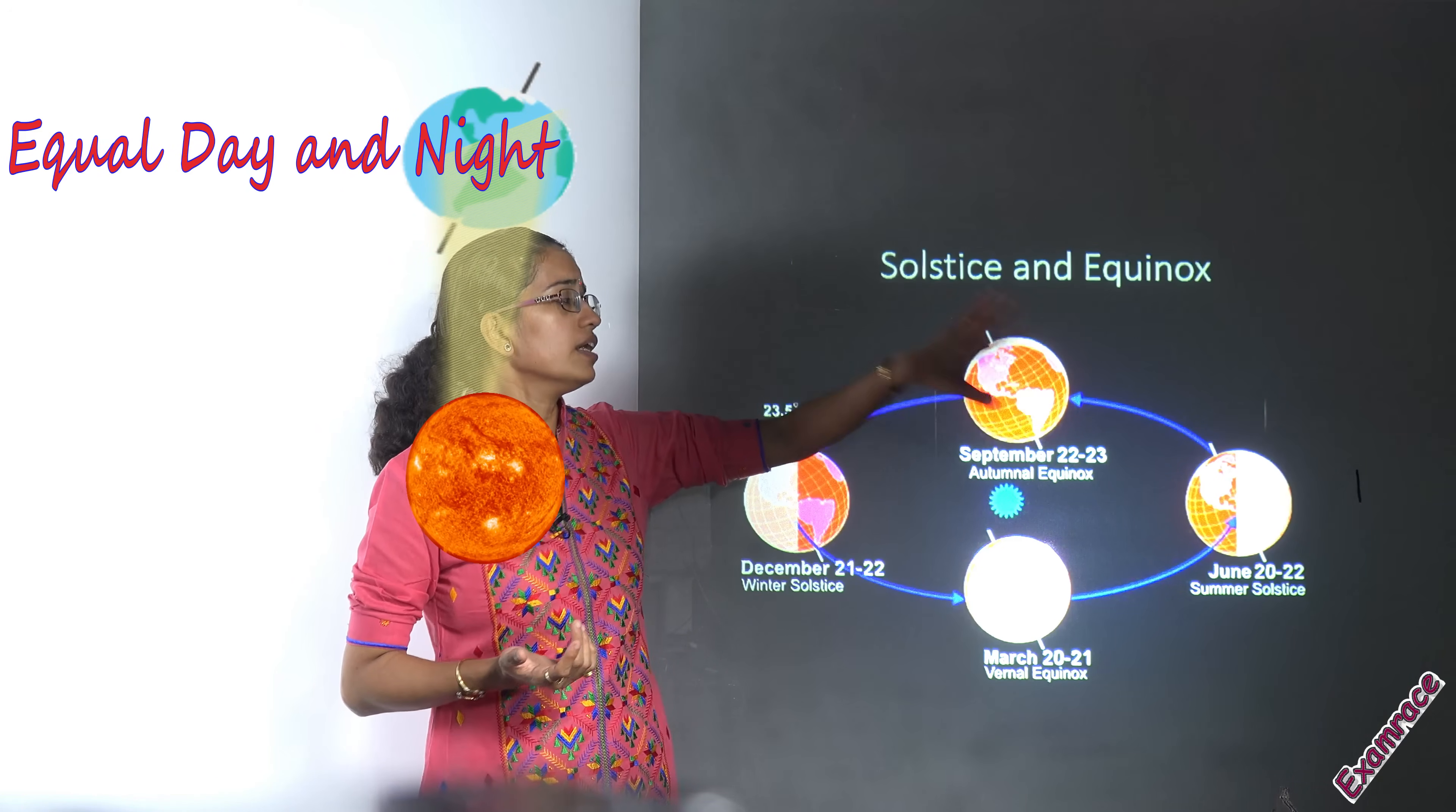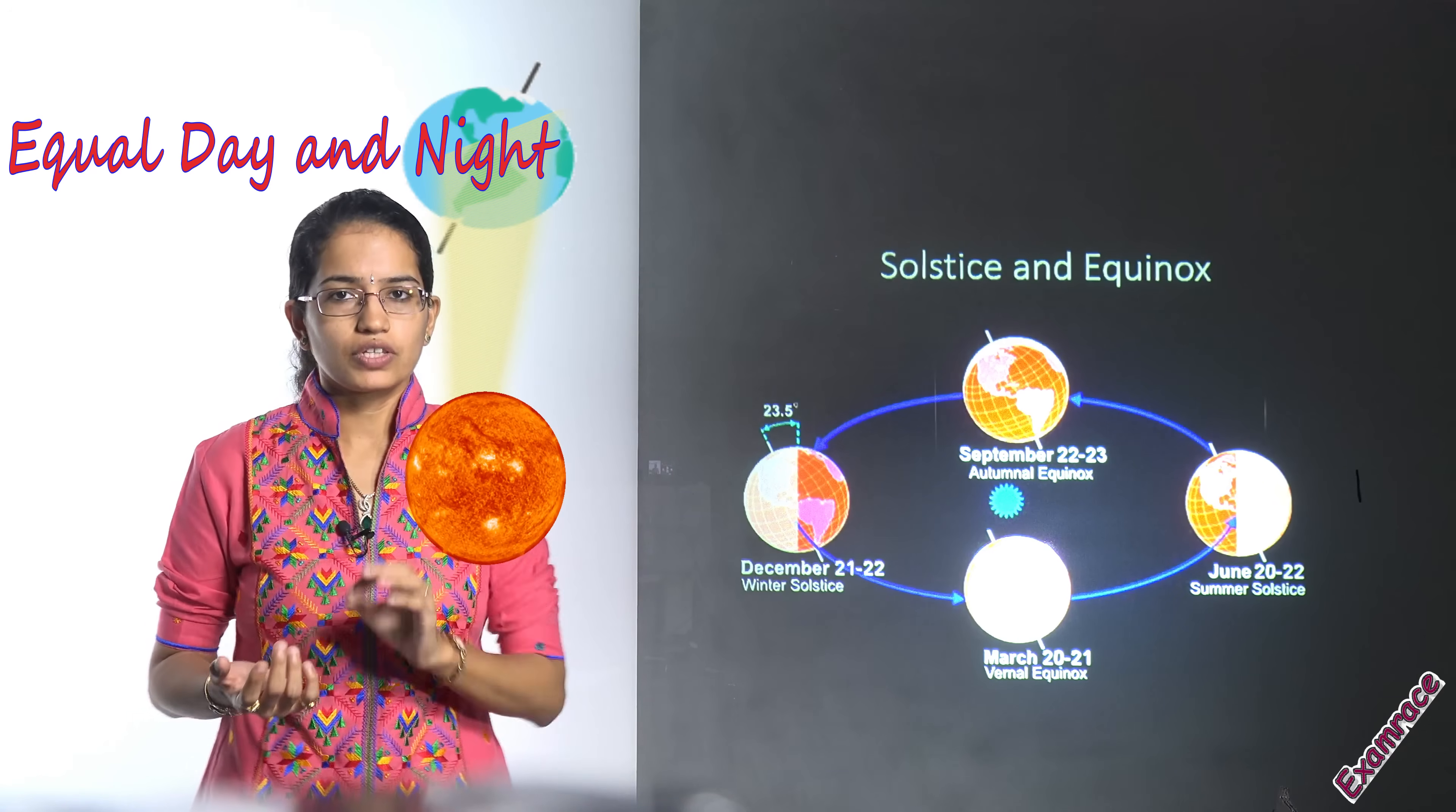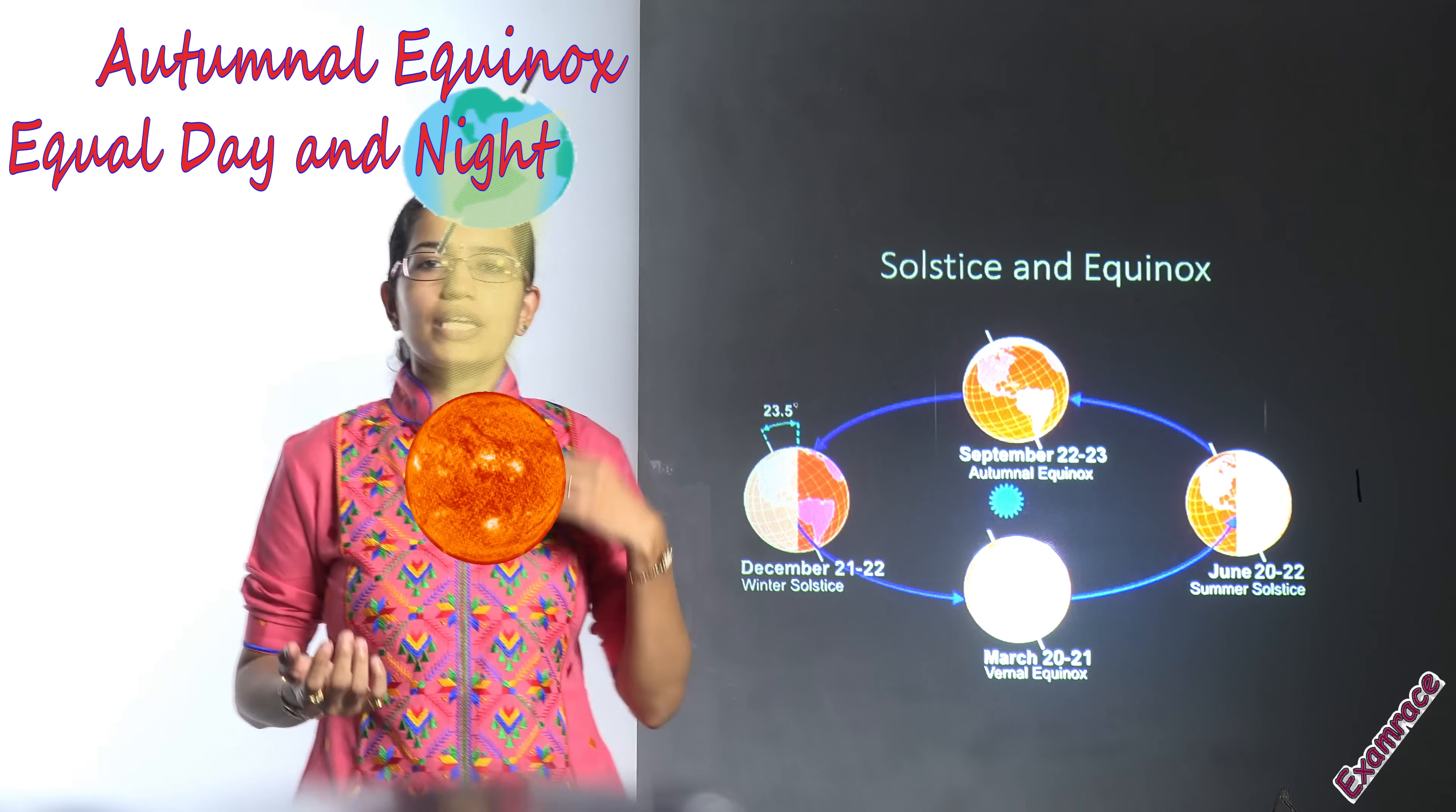You would have the autumn months where you would have the autumn equinox that would be seen, and this would be in the month of September. Usually we say 23rd September you have the autumn equinox.